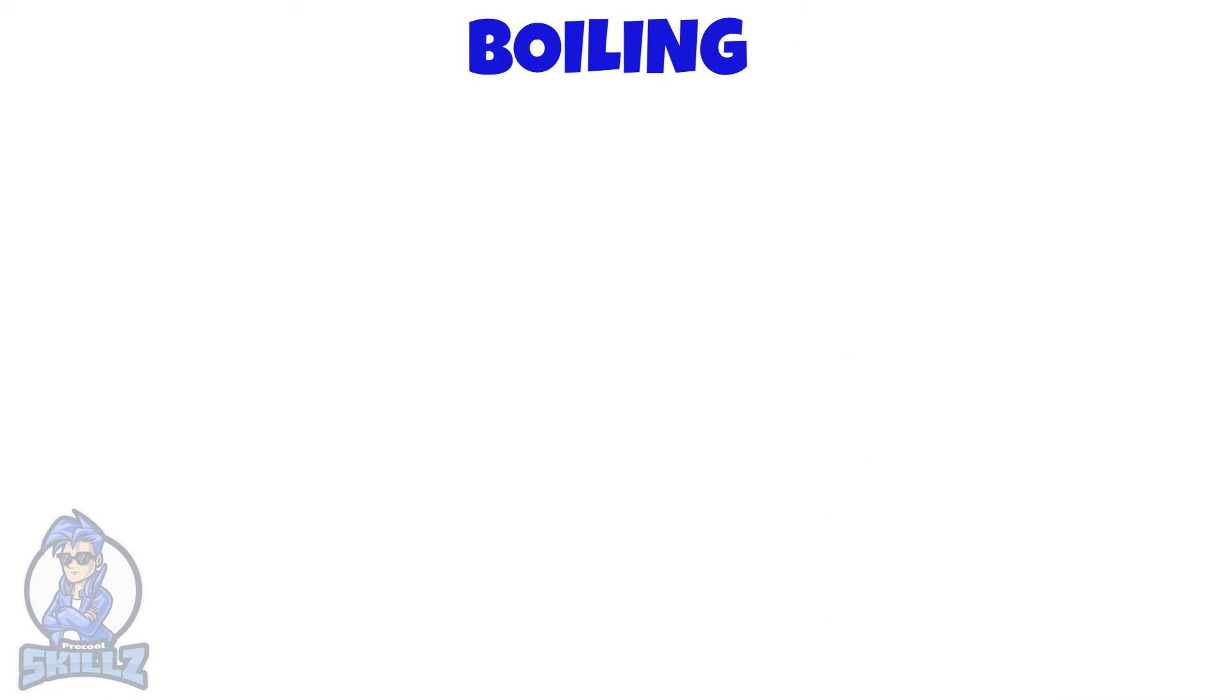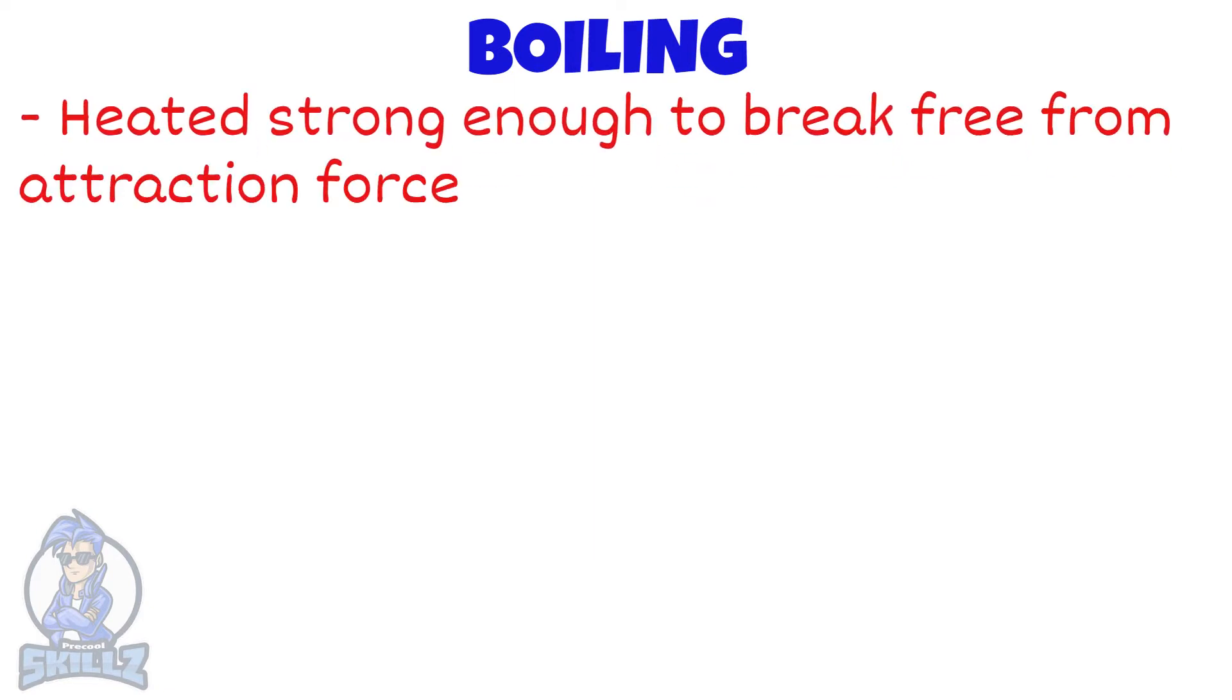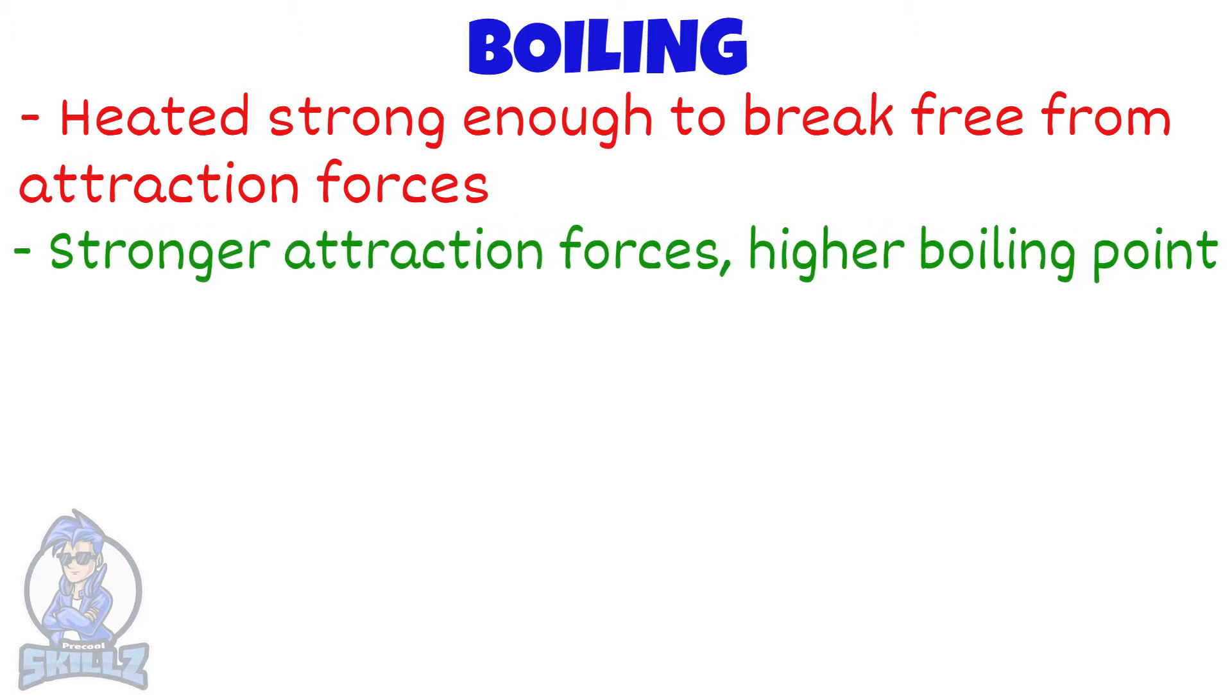There are two different ways a liquid can turn into a gas. First is boiling. Boiling is when a liquid is heated strong enough for the particles to break free from the forces of attraction. The boiling point will be higher if the forces of attraction are stronger since more energy is needed to overcome the forces of attraction.